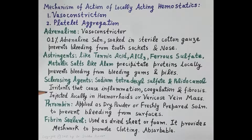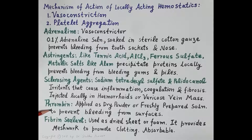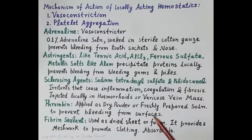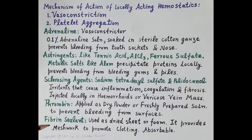Sclerosing agents are irritants that cause inflammation, coagulation, and fibrosis. They are injected locally in hemorrhoids (piles) or varicose veins to prevent bleeding. The next locally acting hemostatic agent is thrombin, applied as a dried powder or freshly prepared solution to prevent bleeding from surfaces. It is derived from plasma, should not be injected, and converts fibrinogen to fibrin, which forms the clot.